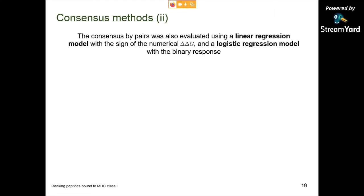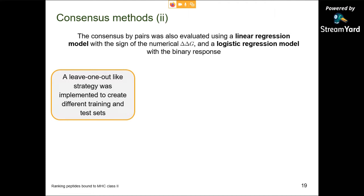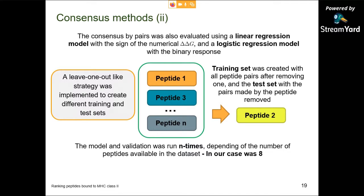This consensus was also evaluated using two additional models: a linear regression model to predict the sign of the numerical delta-delta G, and a logistic regression model with a binary response. To test these models, we apply a leave-one-out cross-validation strategy. From the initial set of peptides, we remove one at a time; the remaining peptides form the training set with all possible peptide pairs, and the removed peptide forms the test set with all possible pairs. This model-and-validation cycle is repeated eight times, once per peptide.